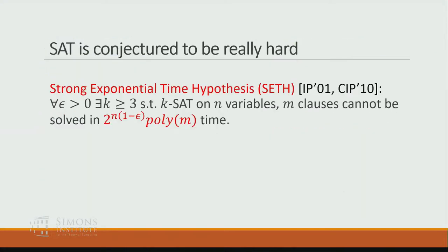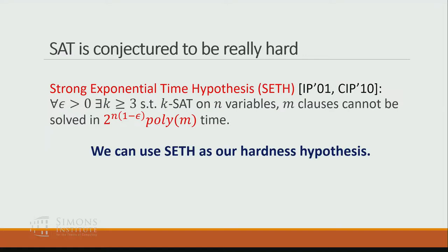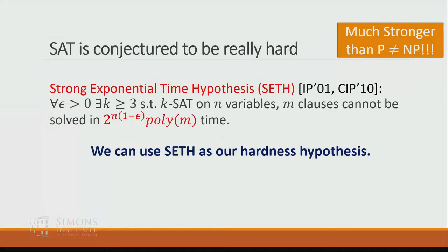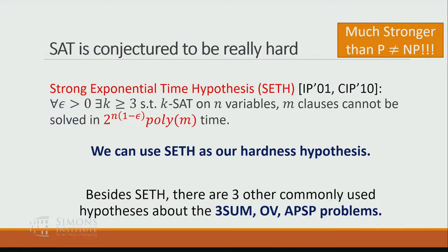For the hypotheses: SAT is conjectured to be harder than just requiring super-polynomial time. The Strong Exponential Time Hypothesis (SETH) states that for any ε > 0, there exists some k such that k-SAT on n variables and m clauses cannot be solved in 2^((1−ε)·n) · poly(m) time. So essentially there is no 2^(0.999n) time algorithm for k-SAT for arbitrary k. SETH is much stronger than P ≠ NP because the conjectured lower bound is much higher than just super-polynomial. Besides SETH, there are three other commonly used hypotheses about the 3SUM, OV, and APSP problems.